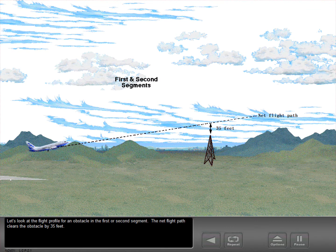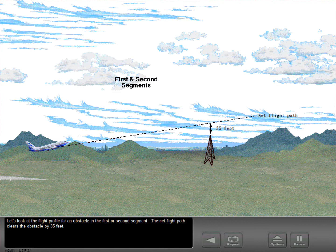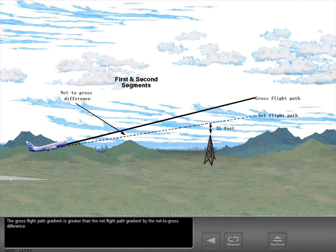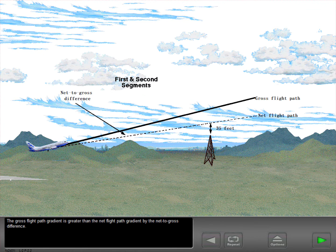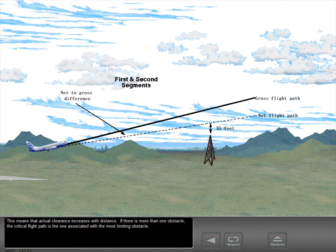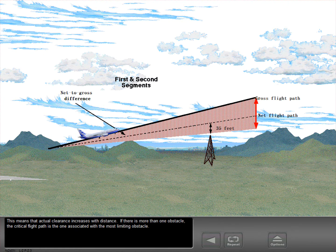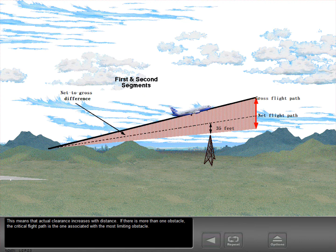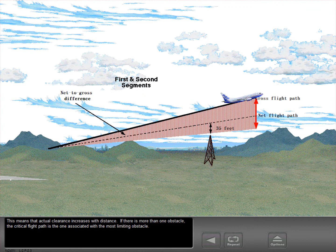Let's look at the flight profile for an obstacle in the first or second segment. The net flight path clears the obstacle by 35 feet. The gross flight path gradient is greater than the net flight path gradient by the net to gross difference. This means that actual clearance increases with distance. If there is more than one obstacle, the critical flight path is the one associated with the most limiting obstacle.